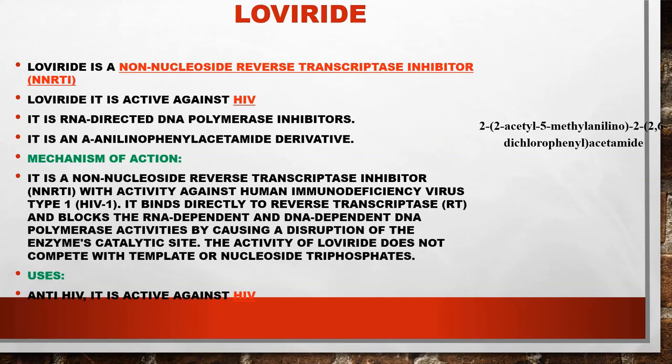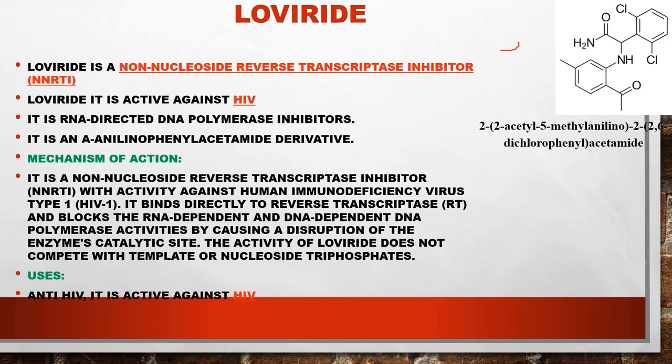The next drug is loviride. Its IUPAC name is 2-(2-acetyl-5-methylanilino)-2-(2,6-dichlorophenyl)acetamide. Loviride is a non-nucleoside reverse transcriptase inhibitor (NNRTI) active against HIV. It binds to the reverse transcriptase enzyme and blocks both DNA-dependent and RNA-dependent polymerase activity, stopping DNA replication. This is also an anti-HIV drug.